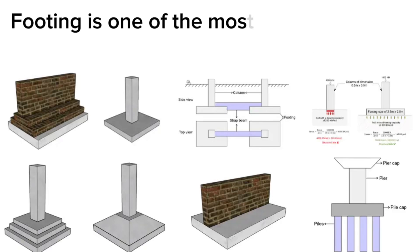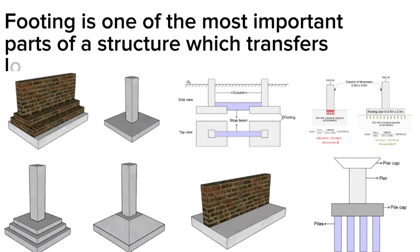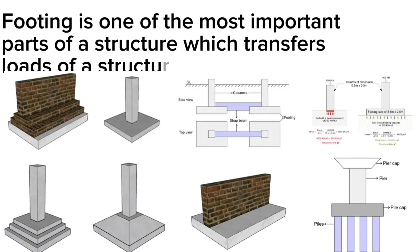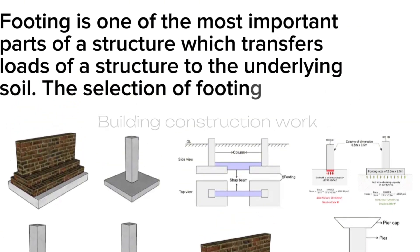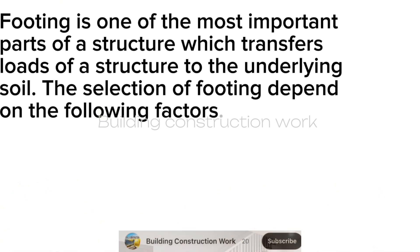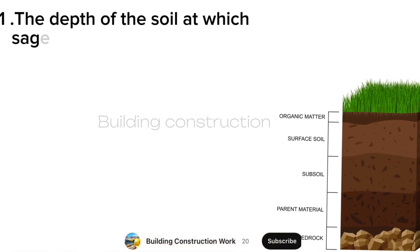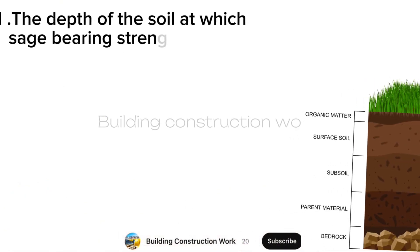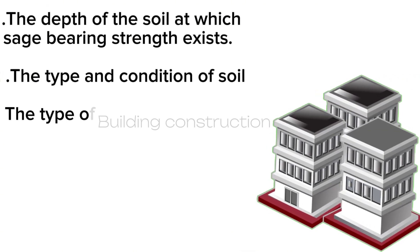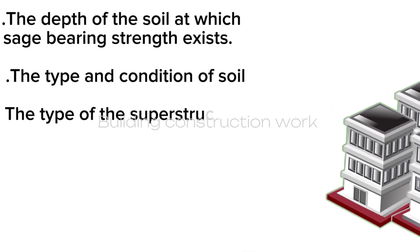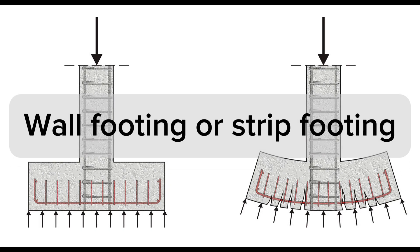Footing is one of the most important parts of a structure, which transfers loads of a structure to the underlying soil. The selection of footing depends on the following factors: one, the depth of the soil at which safe bearing strength exists; two, the type and condition of soil; three, the type of the superstructure — wall footing or strip footing.